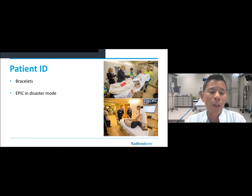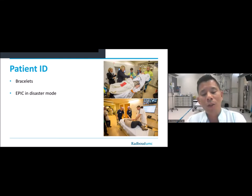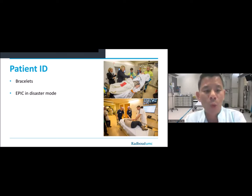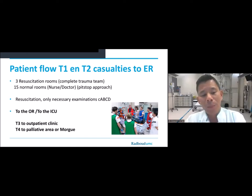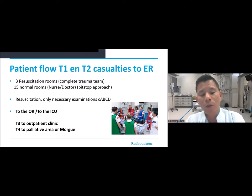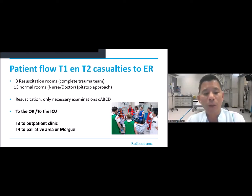Like many hospitals, we use an electronic patient file system. We have a switch that activates the EPIC system in disaster mode, making things quicker. In the ER, the approach is quick resuscitation with only necessary examination, focusing on the ABCD HLS protocol. After that, patients go to OR, ICU, outpatient, palliative area, or the morgue. We have three resuscitation rooms fitted with complete trauma teams, and 15 normal rooms — it's a quick pit stop approach: rapid resuscitation, assessment, and then a decision on the patient's destination.